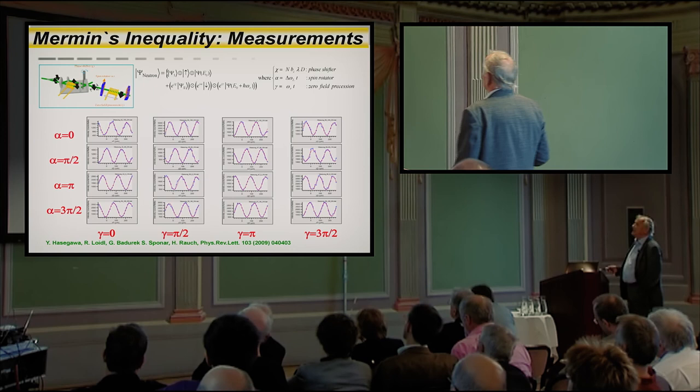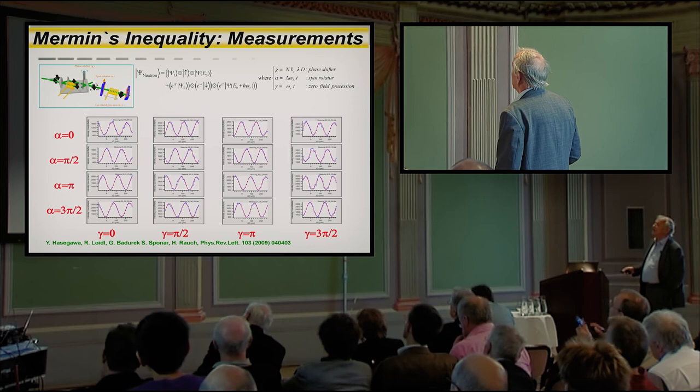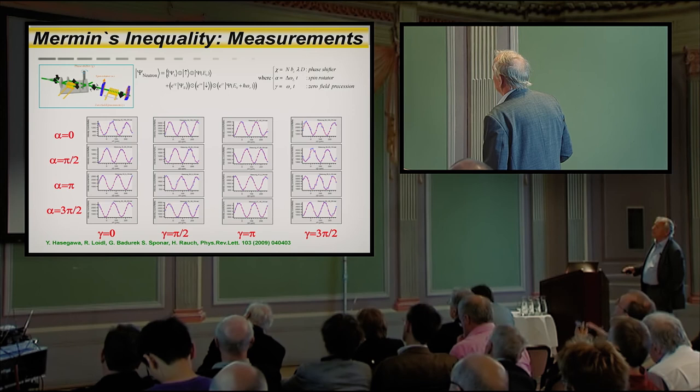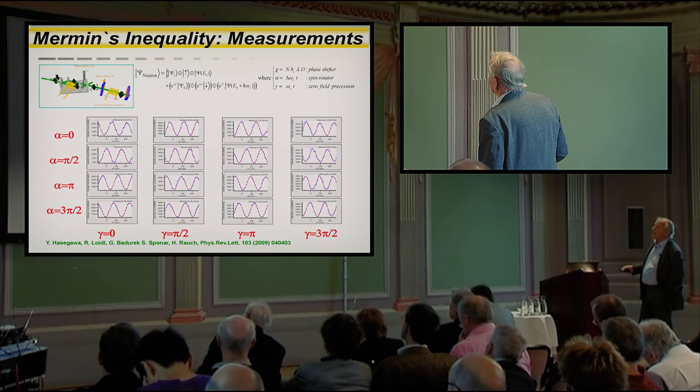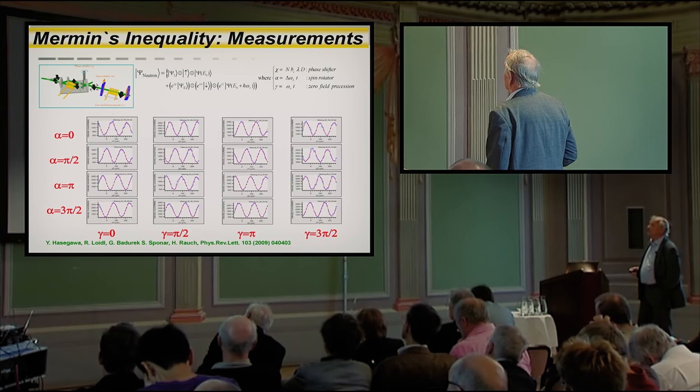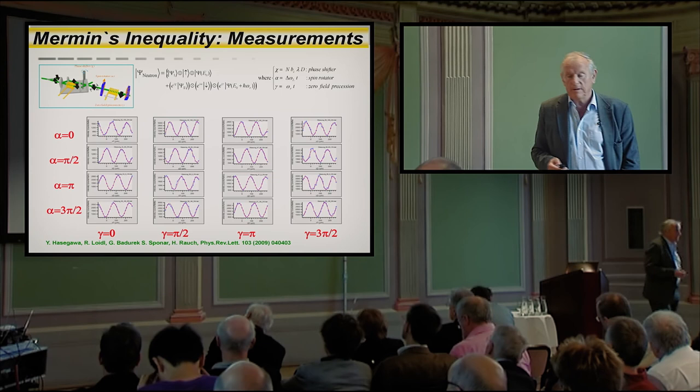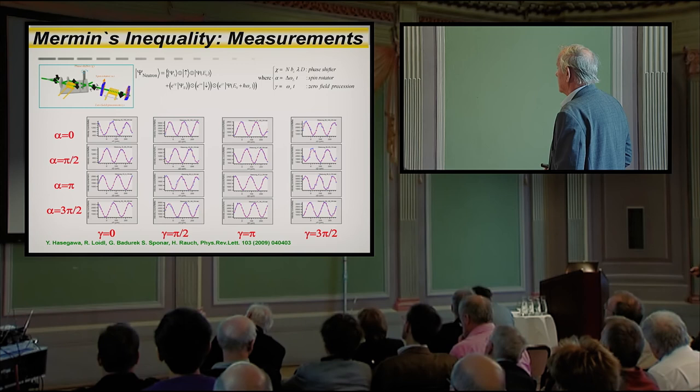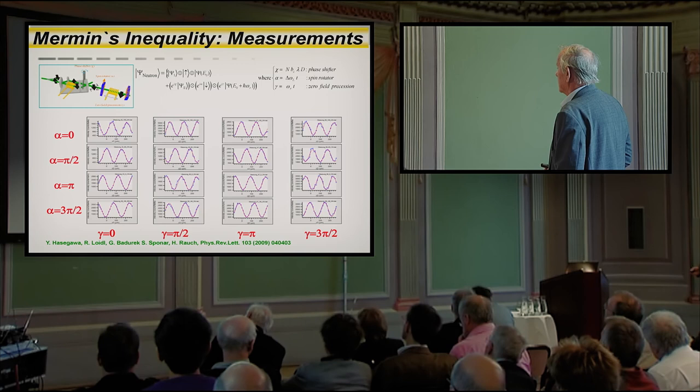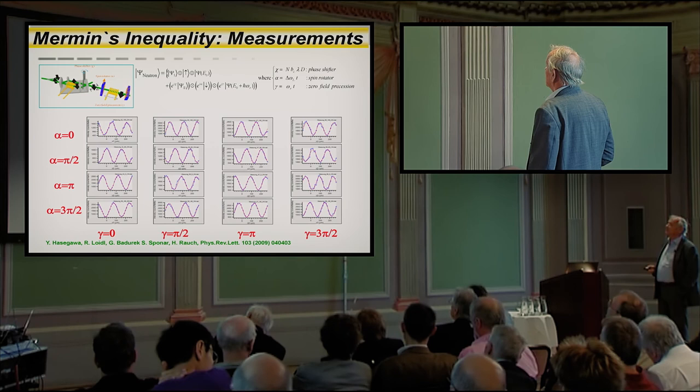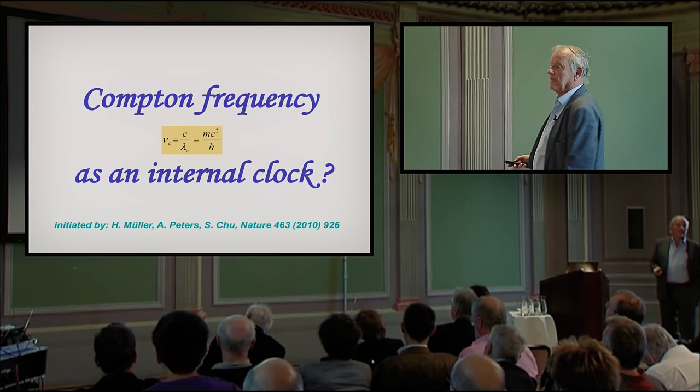And here you see such a measurement where you have the polarization, where you have here the energy, that means the number of rotations, Larmor rotations, and the spatial coordinate is given here in all big pictures. And from that you can prove a lot of Einstein-Podolsky relations and Mermin inequalities and similar things that's becoming our own branch of research. And I guess Yuji will report on that in more detail.